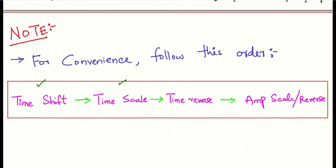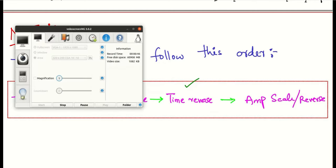We've solved three problems, each using two methods. Both methods are right, but the first method was slightly simpler as we didn't have to adjust the value of t. So an important note: for convenience, follow this order — first perform time shifting, then time scaling, then time reversal, and then any amplitude operation. Amplitude operations are simpler and not an issue. Thanks for watching the video. I've uploaded the PDF used in this presentation — you can find the link in the description. Thank you very much.